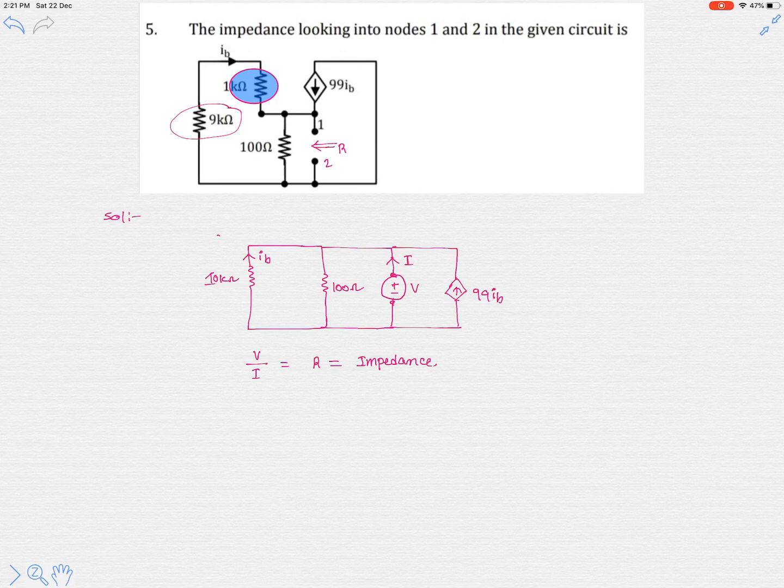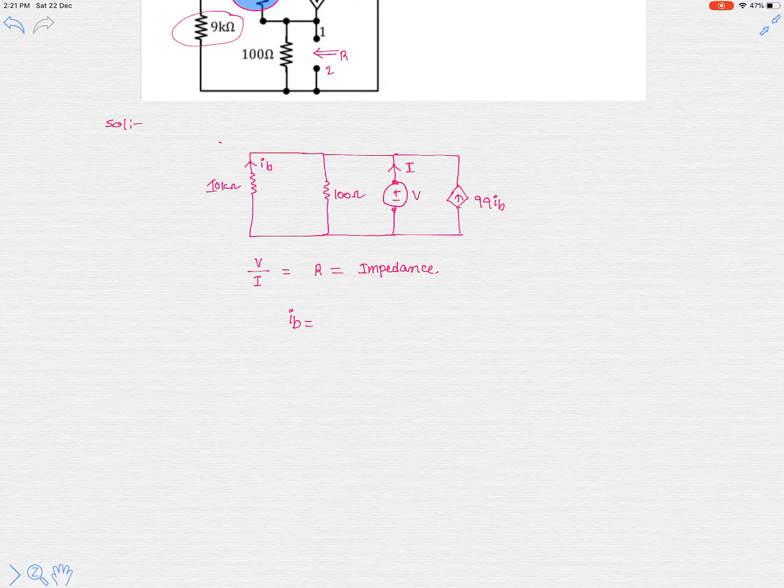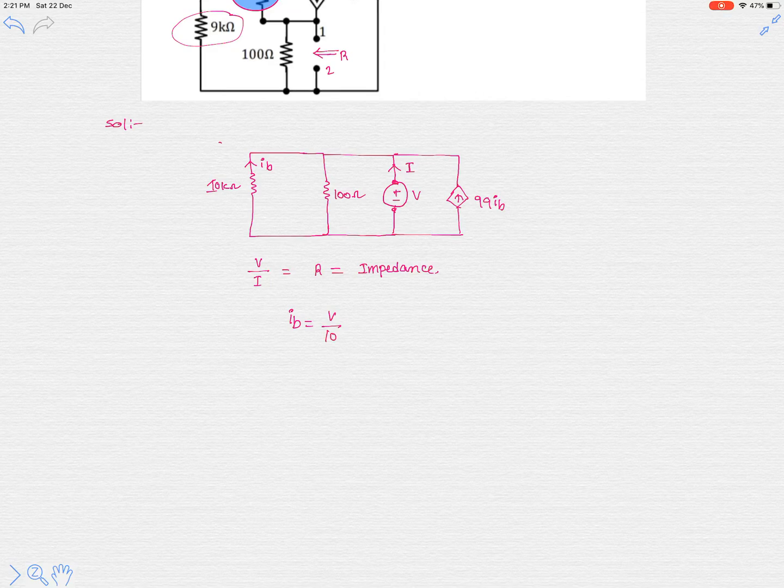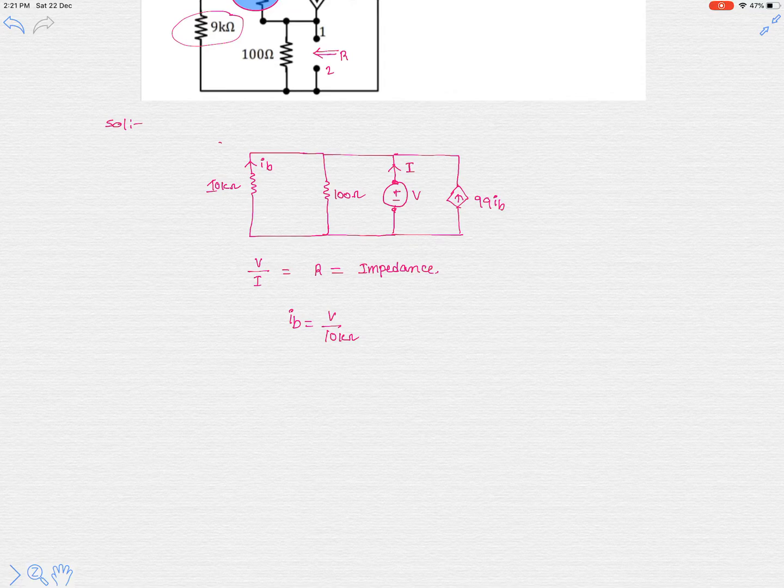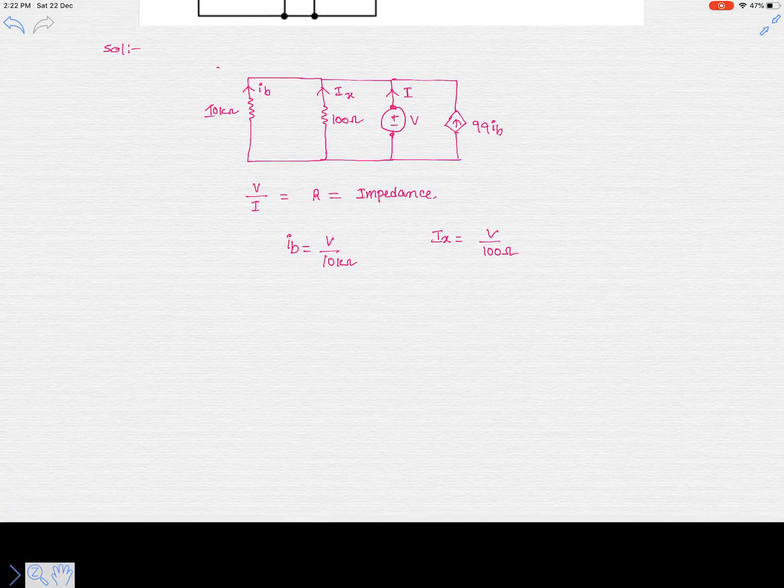So now Ib we can calculate simply as V over 10 kilo-ohm, because the voltage across the 10 kilo-ohm resistor is V. The current flowing in this 10 kilo-ohm is simply V over 10 kilo-ohm. Let's say this current is Ix, so Ix also simply we can write as V over 100 ohm.